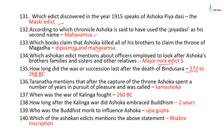Taranath mentions that after capturing the throne, Ashoka spent a number of years in pursuit of pleasure and was called Kamashoka. The war of Kalinga was fought in 261 BC. Ashoka embraced Buddhism two years after the Kalinga war. The Buddhist monk who influenced Ashoka was Upagupta. The Bhabra inscriptions mention the Kalinga war and the Buddhist monk.